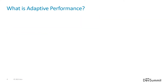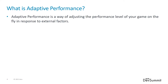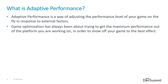So what is adaptive performance? Simply put, it is a way to adjust the performance of your game while the game is running in response to external factors. When we make a game, particularly a AAA game, we try to get the maximum performance out of the device it is running on to show the game at its best. This can be done through better code, better assets, or more often a combination of the two.